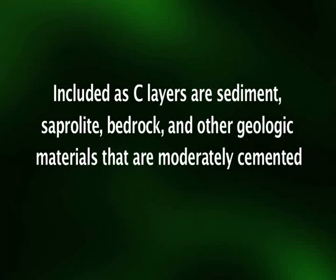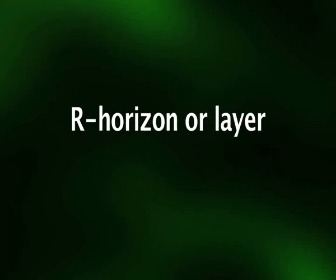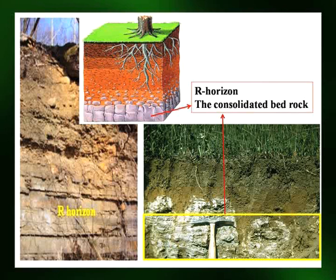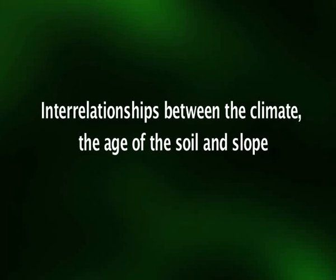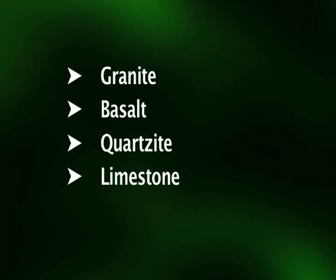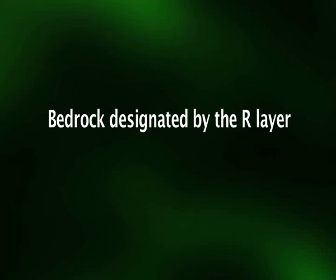The C horizon includes as layers sediment, saprolite, bedrock, and other geologic materials that are moderately cemented. The R horizon, also called the D horizon in some soil classifications, constitutes the underlying cemented and consolidated bedrock, or sometimes the sediment from which overlying horizons have developed. The depth from the surface to the R horizon depends on interrelationships between climate, the age of the soil, and slope. Granite, basalt, quartzite, limestone, and sandstone are examples of bedrock designated by the R horizon, and soils formed in situ will exhibit strong similarities to this bedrock layer.